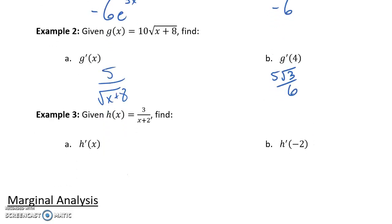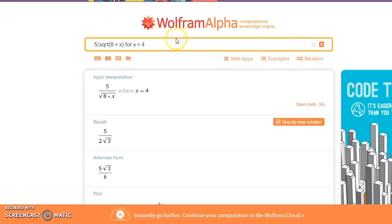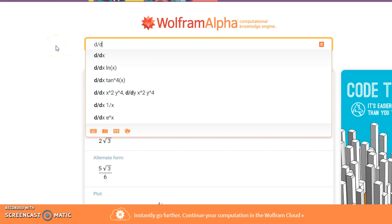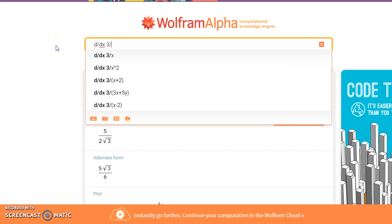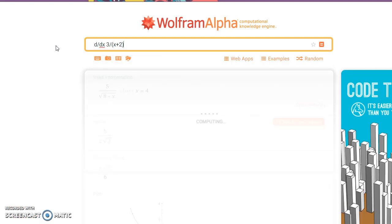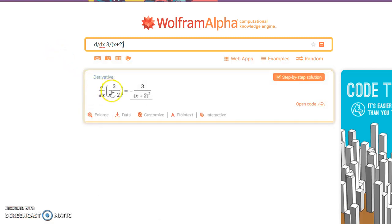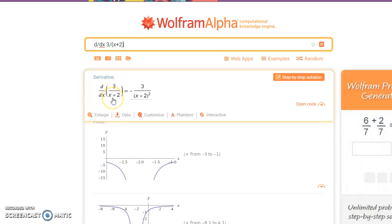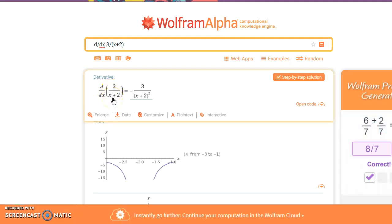Looking at one more example, now we have a rational function that we want to differentiate. So again, we would type d over dx, 3 over x plus 2. Putting that denominator in parentheses so that WolframAlpha recognizes that that entire expression should be in the denominator. And again, as a reminder, it's a good idea to check what WolframAlpha considers your input to be, just to make sure this statement matches what you think you should be evaluating.